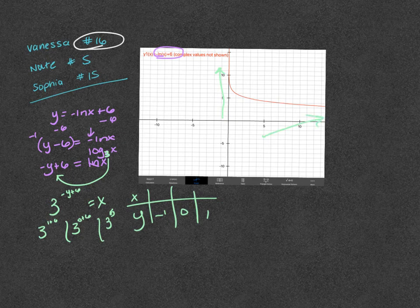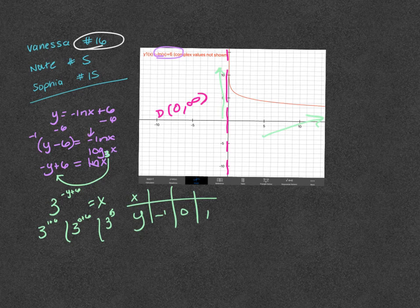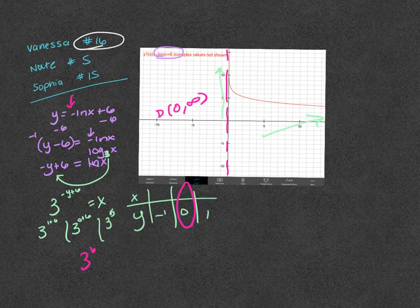The graph goes up very high and doesn't get close to the x-axis until it's way far out. The asymptote is still at zero, domain is still zero to positive infinity, and the x-intercept would be 3 to the sixth. You won't have numbers that large on your quiz, nor will you have a negative in front, so don't stress too much — just know it's a variation.